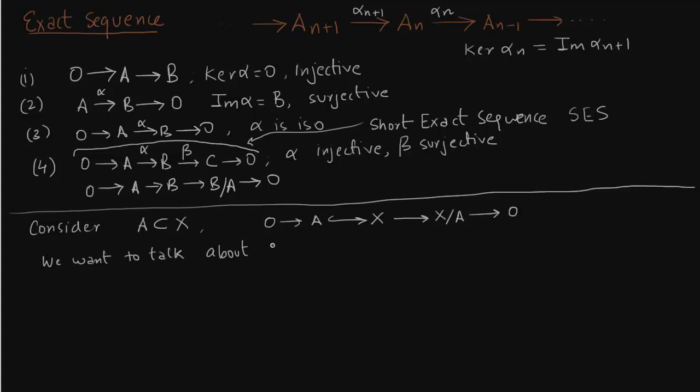So this will give us some relationship between homology groups. So let us write the numbers of A, of X, and the quotient map X over A. Such a pair is called a good pair here. And we write it as X comma A. If there is a relationship between A, X and X over A.